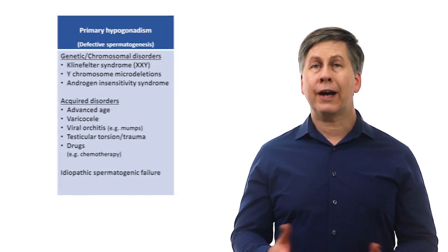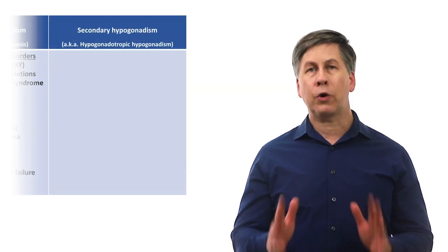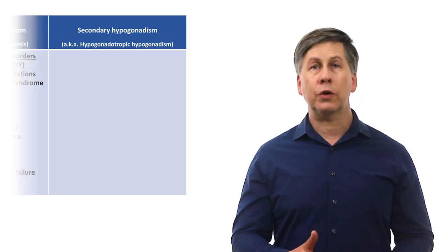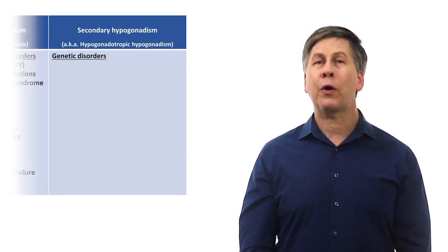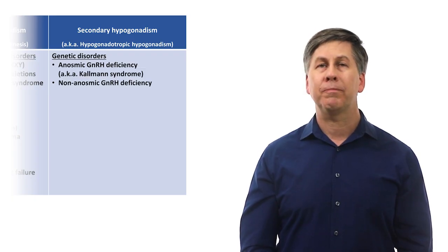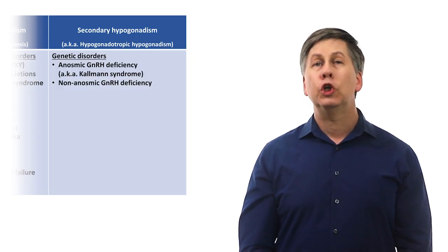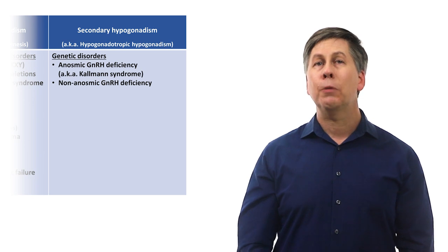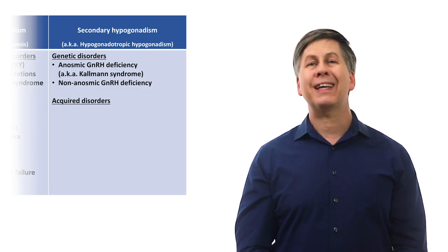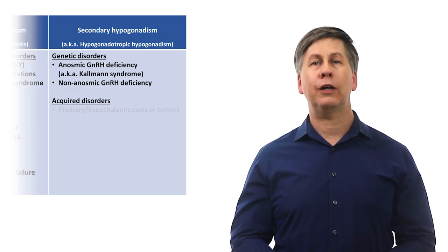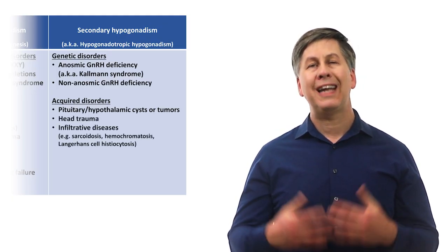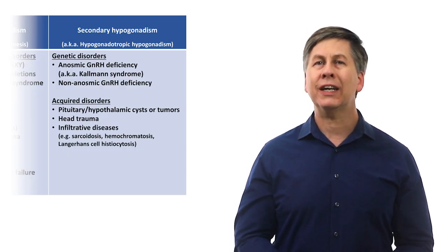The next large category in our diagnostic framework is predictably secondary hypogonadism, problems with the hypothalamus and pituitary. These can also be subdivided into genetic and acquired disorders. The genetic causes of secondary hypogonadism are rare and include both anosmic and non-anosmic GNRH deficiency. Anosmia is a lack of smell. Genetic diseases can also impact the structure and function of LH and FSH, but these are profoundly rare. Acquired secondary hypogonadism includes virtually any pathology of the hypothalamus or pituitary, including cysts and tumors, head trauma, and infiltrative diseases such as sarcoidosis, hemochromatosis, and something called Langerhans cell histiocytosis.